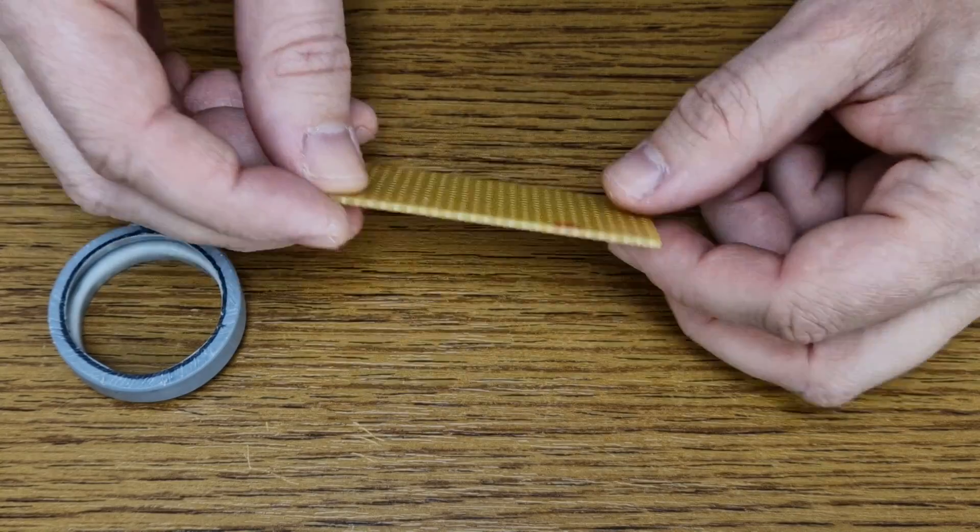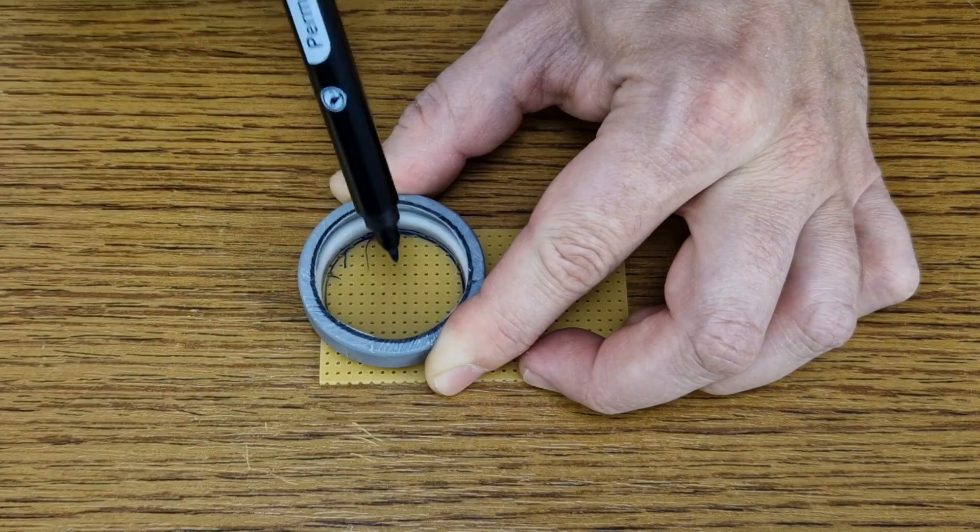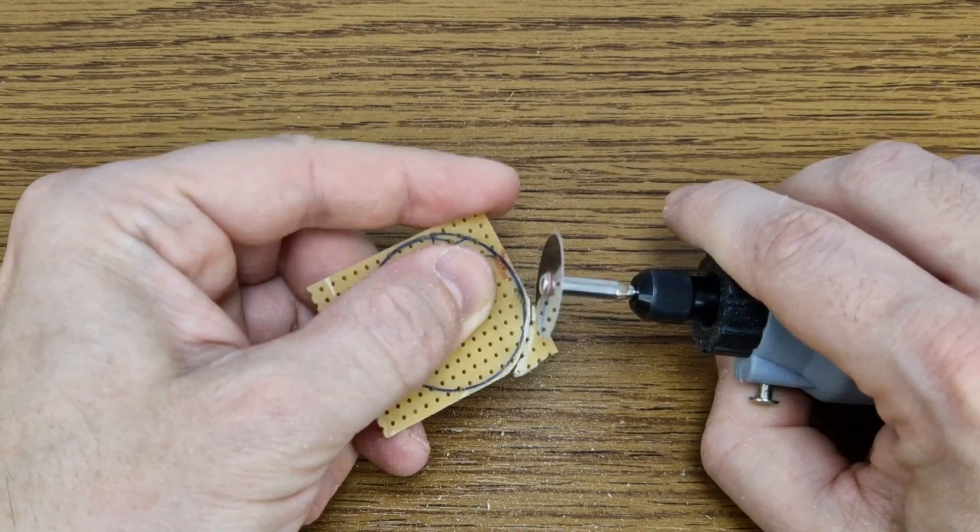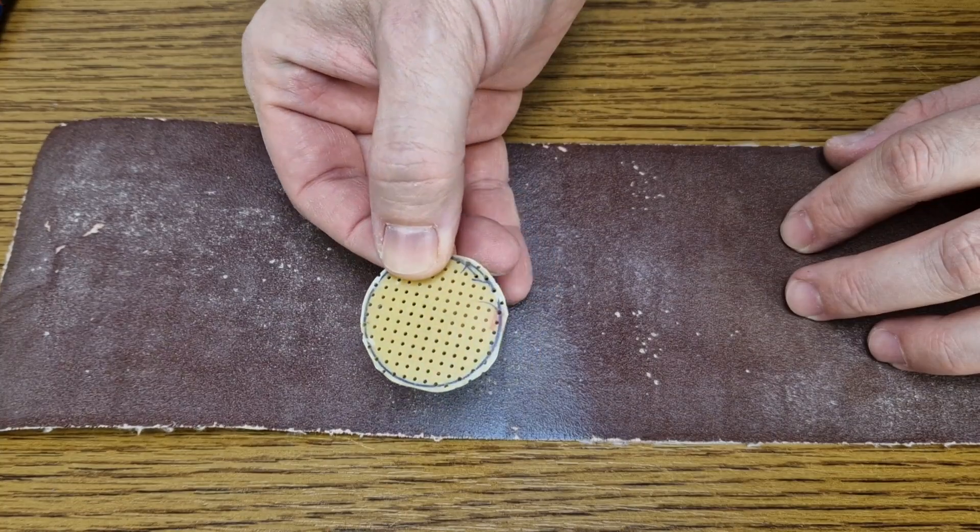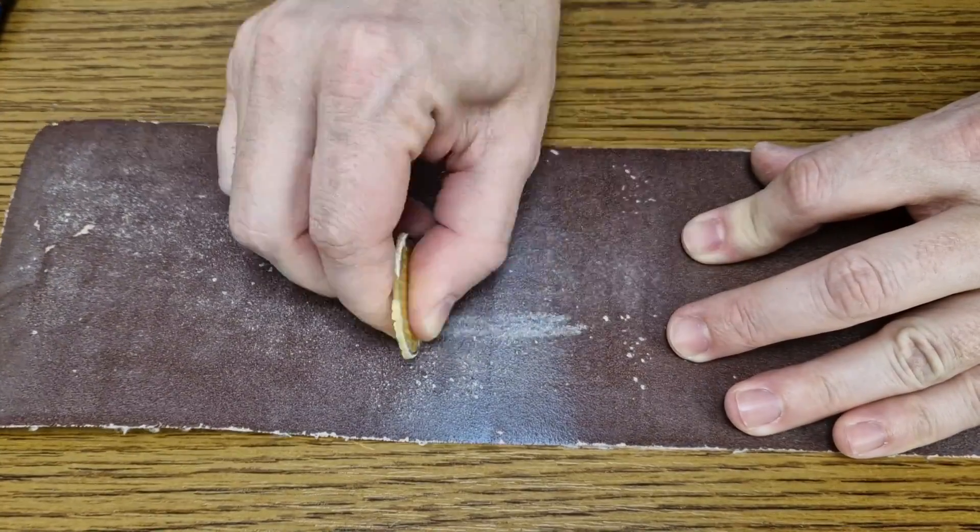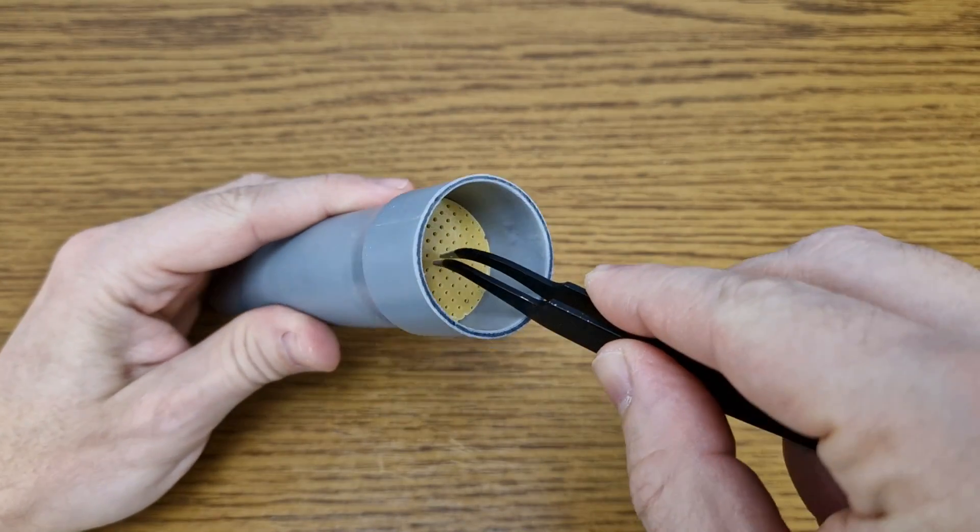I need a panel to mount the LEDs. This piece of perf board should be good enough, but it needs to be round. I will cut the corners of the board with my rotary tool. It's not a perfect circle yet, so I will use some sandpaper to finish the job and make the edge smoother. The perf board is finished.